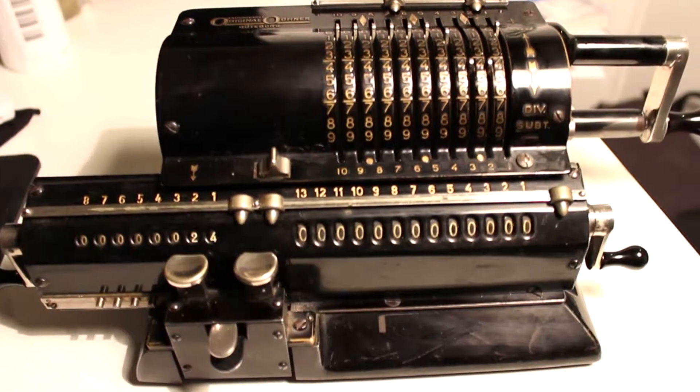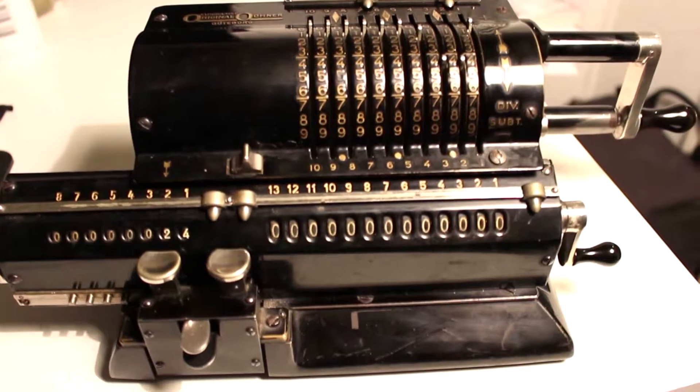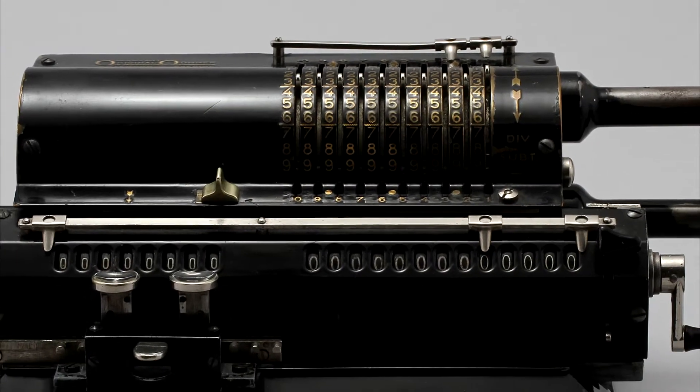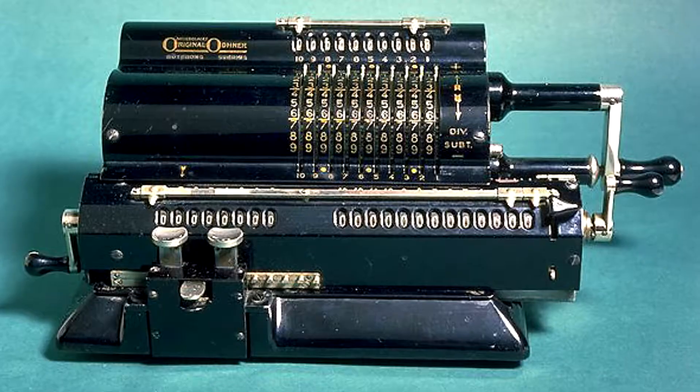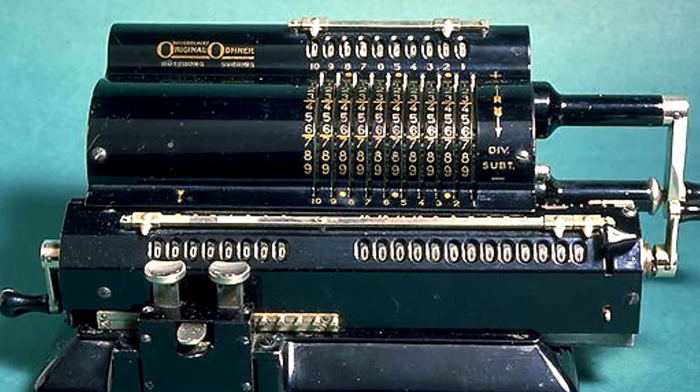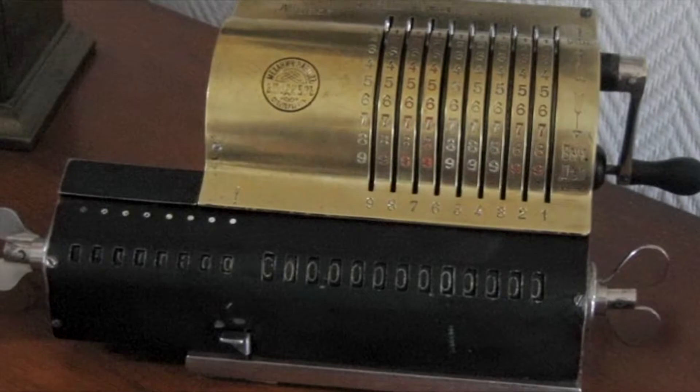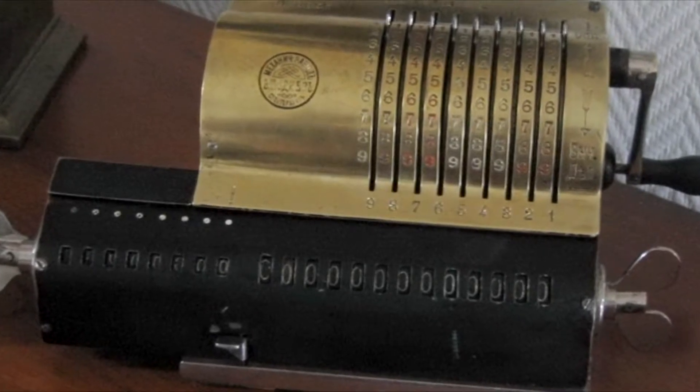Another successful model was Wilgott Ordner's calculator, which was very compact. It was sold until 1918 and 23,000 pieces were produced. Later they were copied and have been sold until the 1970s.